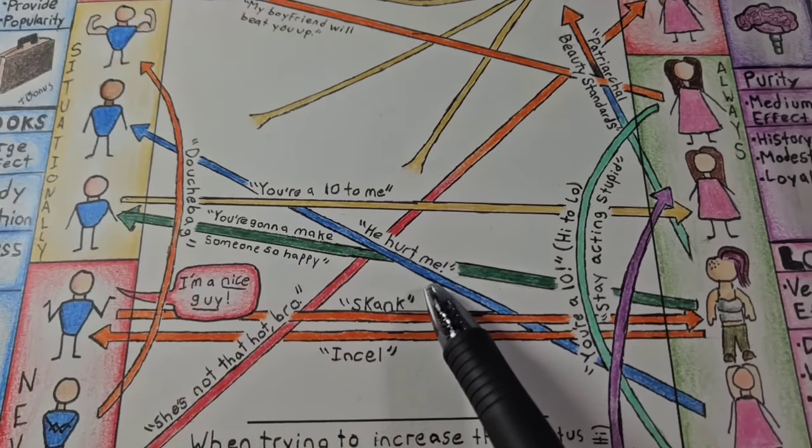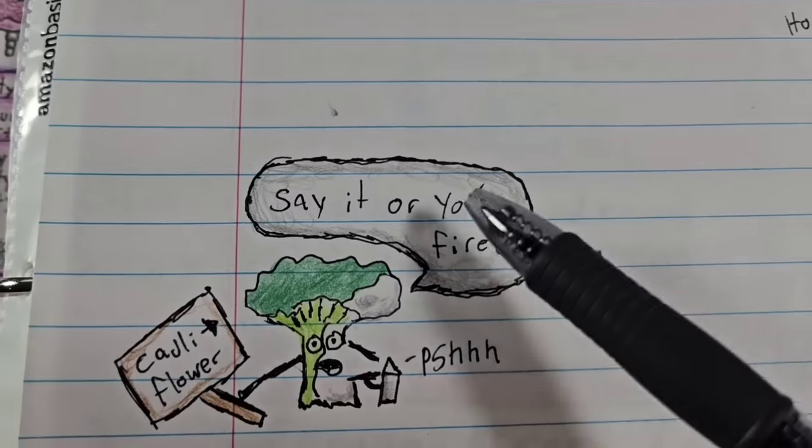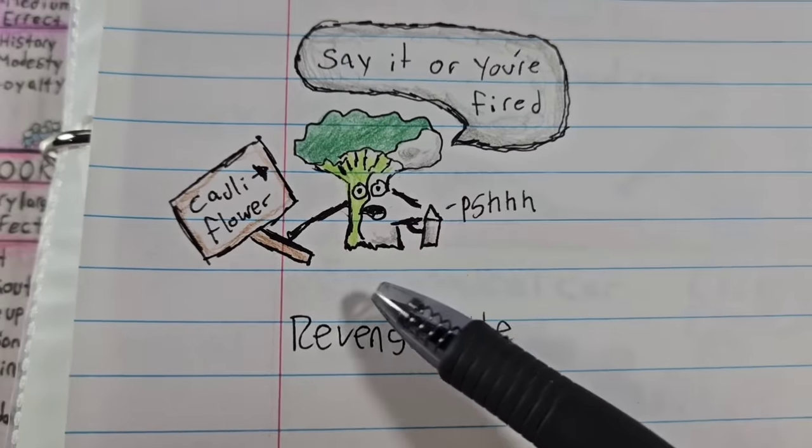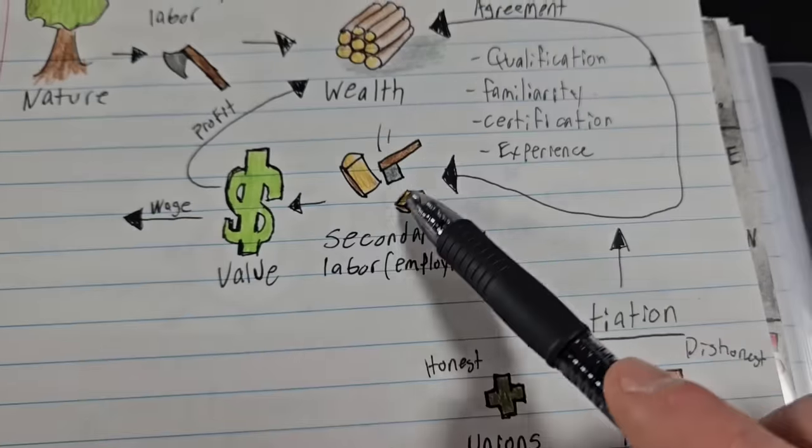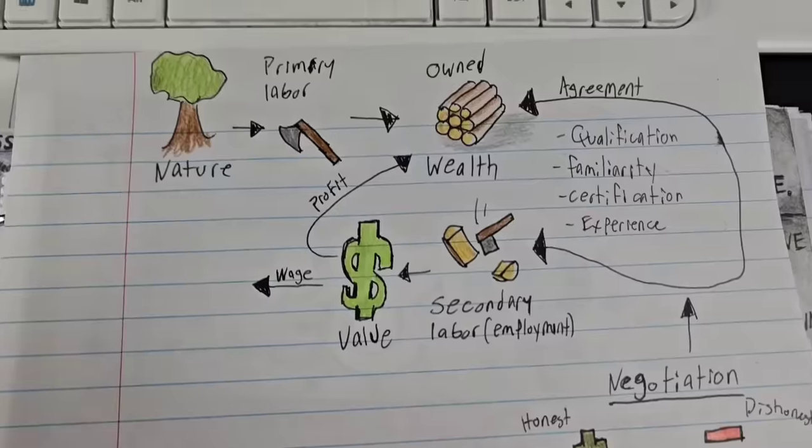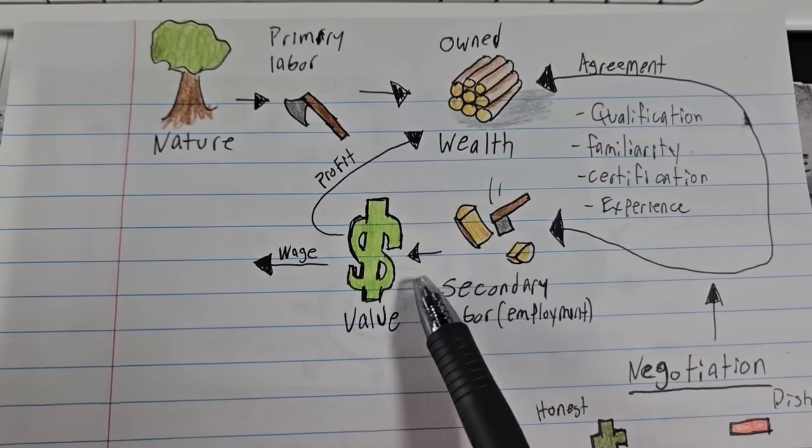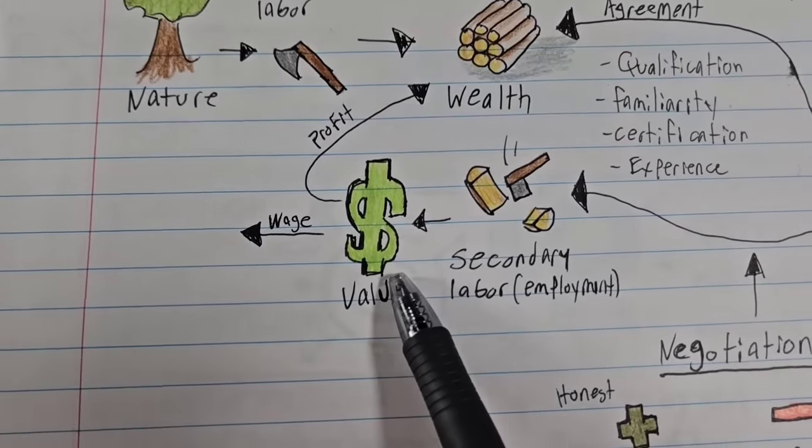These work mostly through accusations. Basically, if you don't say what I want you to say, then you have hurt me. And that's how they get revenge for feeling neglected in this agreement. So this works economically, but it works socially as well. It gets you not just money, but power.